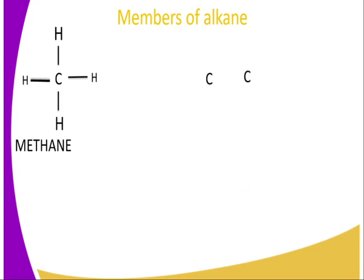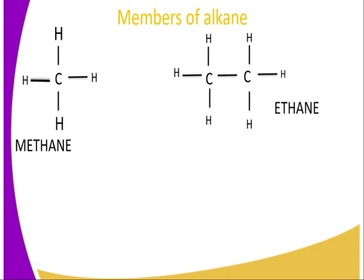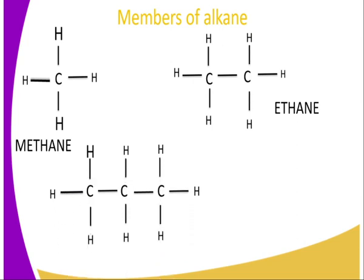The second member has got two carbon atoms. The carbon atoms are bonded to hydrogen atoms to attain stability, and we have the single bond between the carbon-carbon atom. Then carbon-hydrogen are bonded covalently, giving us six covalent bonds to hydrogen atoms, therefore the name ethane. The third member has three carbon atoms; each carbon atom is bonded covalently to the others and to hydrogen atoms, therefore becoming stable, giving the name propane. You can use the same concept to name members four, five, six, seven, etc., and give their formulas.